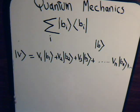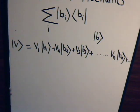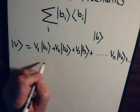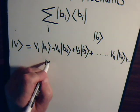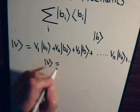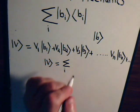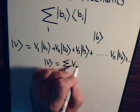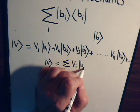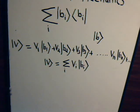Or we can simply write this more succinctly as the sum over i of v_i |b_i⟩ like this.